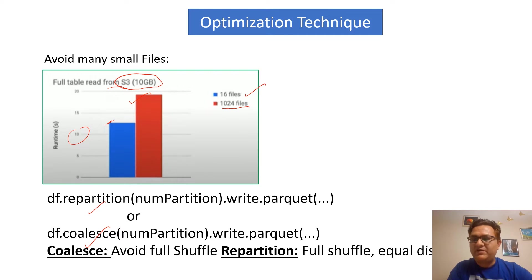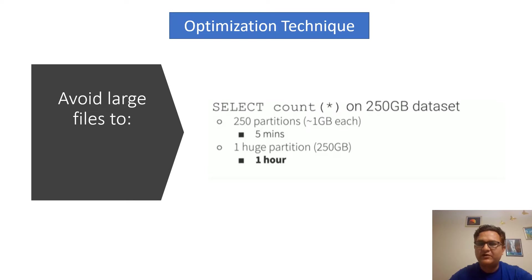The recommended file size will be 128 MB or 256 MB, which will help your organization. As mentioned on the previous slide, making too many small files can hurt performance and slow queries, which directly converts into dollar value. The same is true in reverse — don't make a big file, as that will also hurt your query performance.